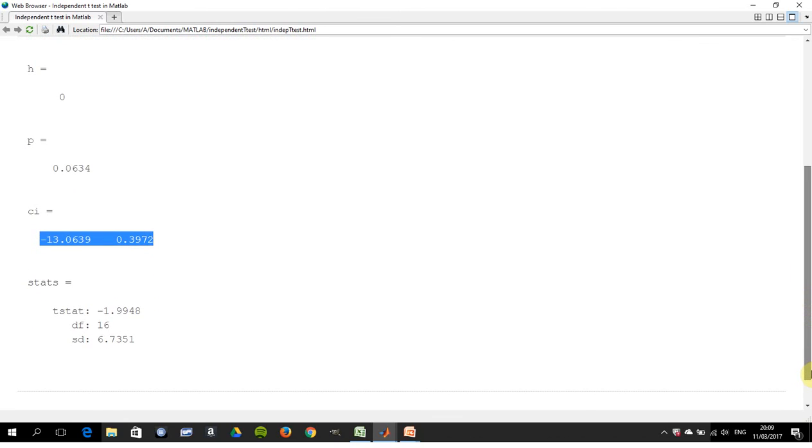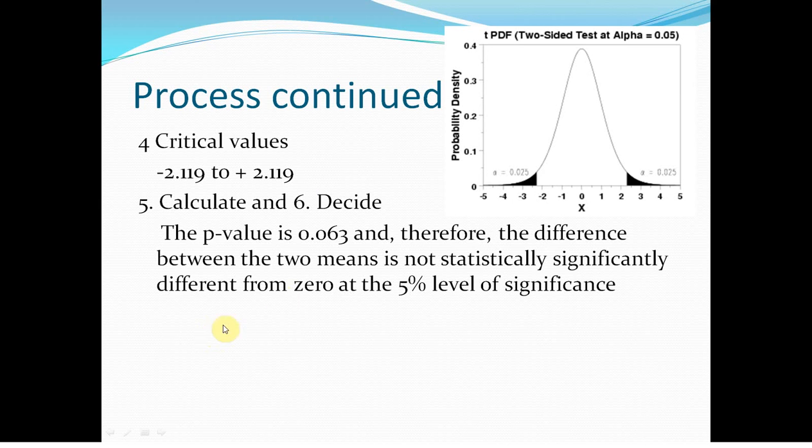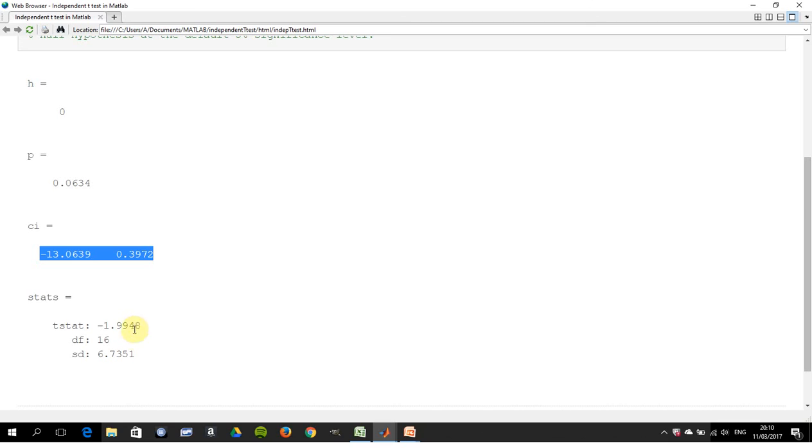There are some stats there. The t-stat is 1.9948. Let me go back to my PowerPoint. So 1.9948 is about there. Remember we were doing a five percent, so any in black on the left and black on the right—if our p-value was in either black region, we would have a reason to reject the null hypothesis. But if our value is between minus 2.11 and plus 2.11, we have no reason to reject the null hypothesis. There we are, 1.9948. I hope that helps. Thanks very much for listening.